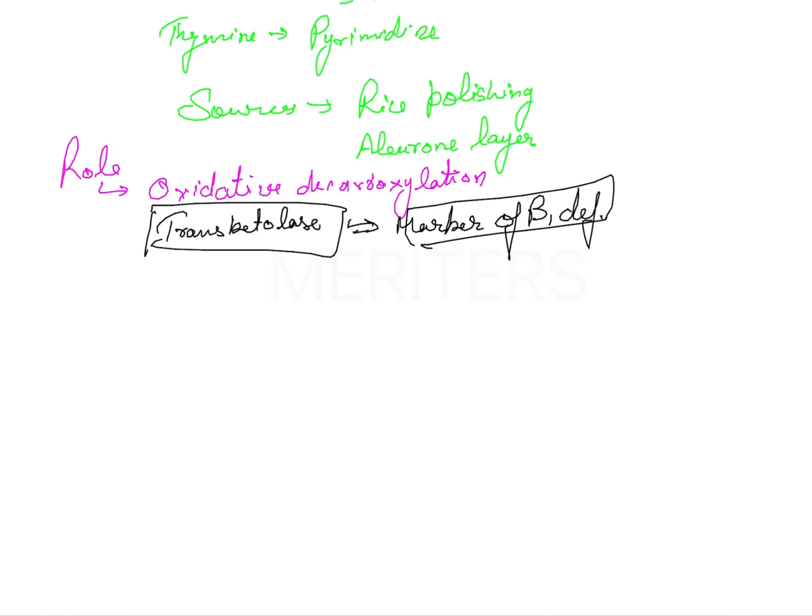Coming to the deficiency of vitamin B1, the marker is transketolase and the deficiency leads to beriberi. This beriberi is classified into two forms: dry beriberi and wet beriberi.